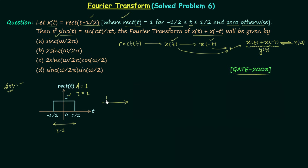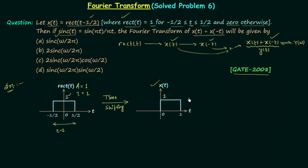After performing the time-shifting operation, we have the waveform shifted to the right by half a second, and this is the waveform of x(t). From x(t) it is very easy to obtain x(−t) — we only need to perform the time reversal operation. After time reversal, we have the new waveform, which is the waveform of x(−t).